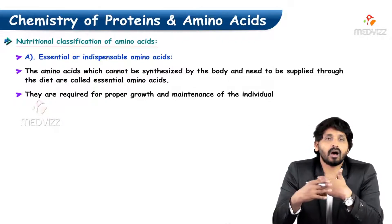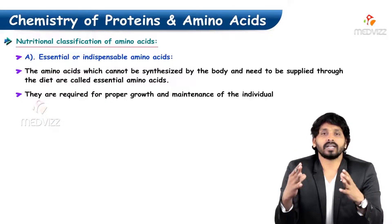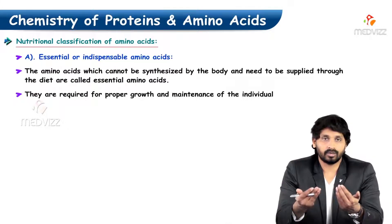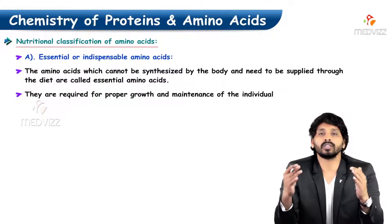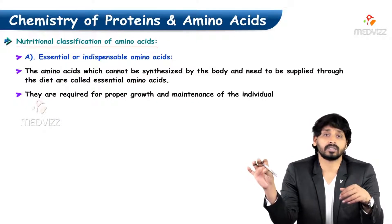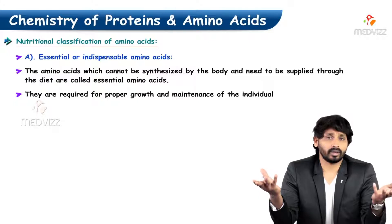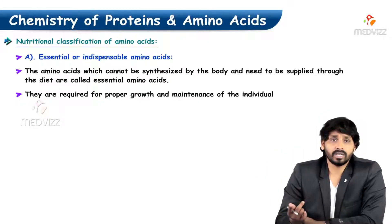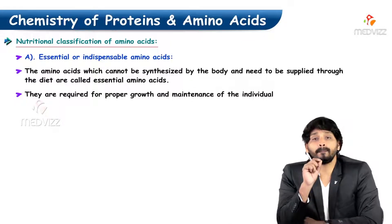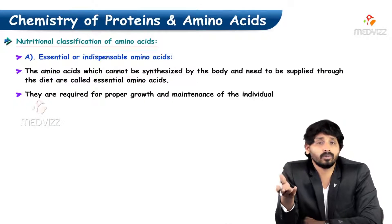Essential, or indispensable, amino acids are those that cannot be synthesized in the body and must be supplied in the diet. Without these amino acids, there is no protein synthesis or protein formation, because our proteins contain all 20 amino acids. If one or two are missing, there is no complete protein. They are required for proper growth and maintenance of the individual.